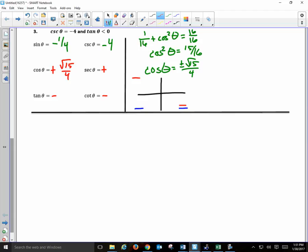So cosine is positive root of 15 over 4. If I flip it, I have 4 over the root of 15. Can I leave it like that? So you have 4 roots of 15 over 15.